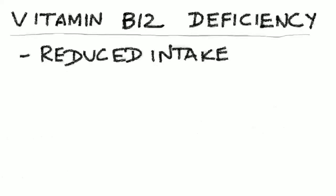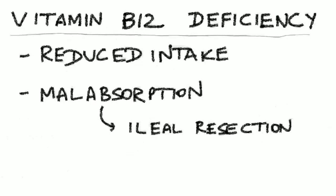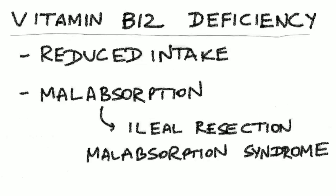Vitamin B12 deficiency can occur because of reduced intake, as seen in pure vegetarians who do not consume meat, which is actually one of the richest sources of vitamin B12. It can also occur in malabsorption conditions like ileal resection, because the ileum is the terminal part of the small intestine and is the site of maximum vitamin B12 absorption. In ileal pathology like tumors where the ileum is resected, there will be vitamin B12 deficiency due to impaired absorption, and in malabsorption syndromes, there will be deficiency of vitamin B12 along with other nutrients.